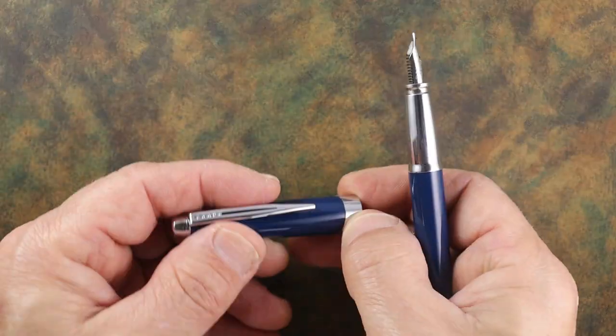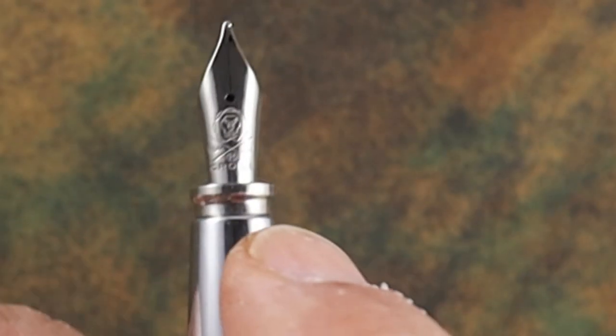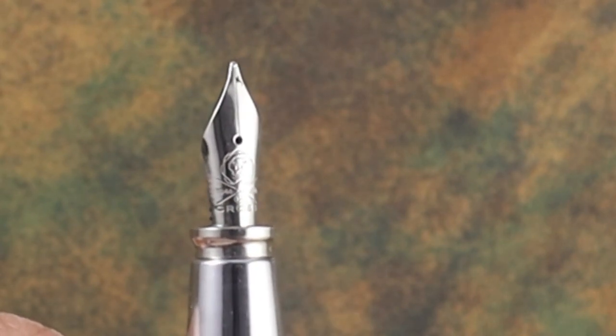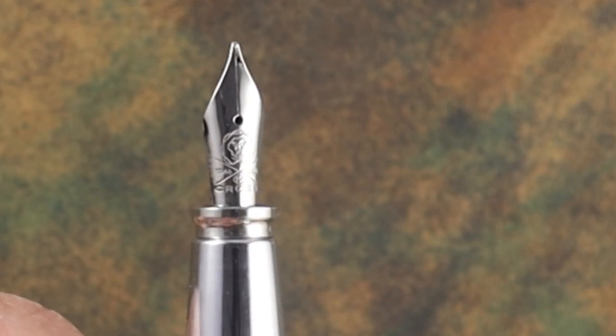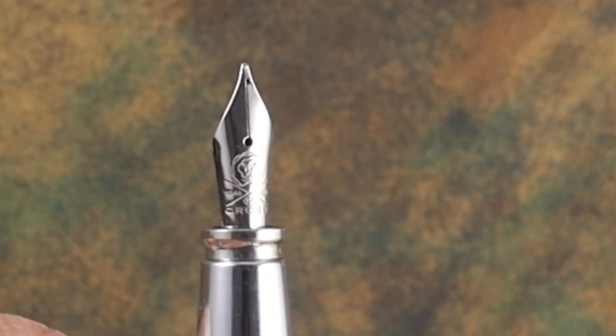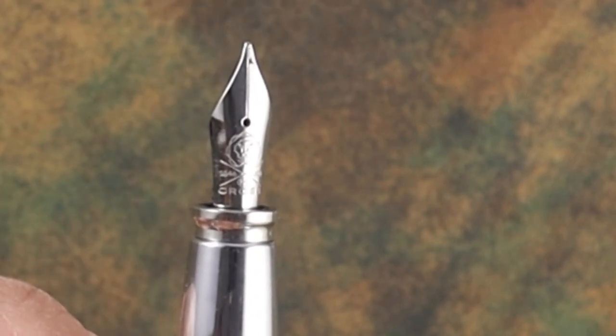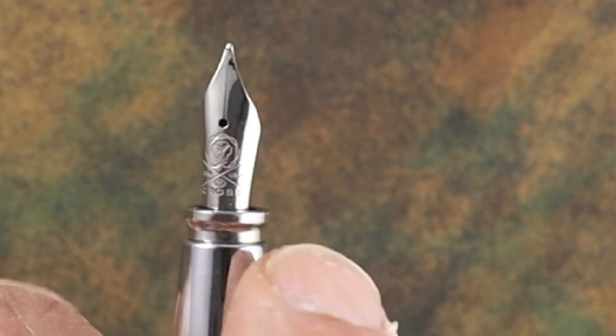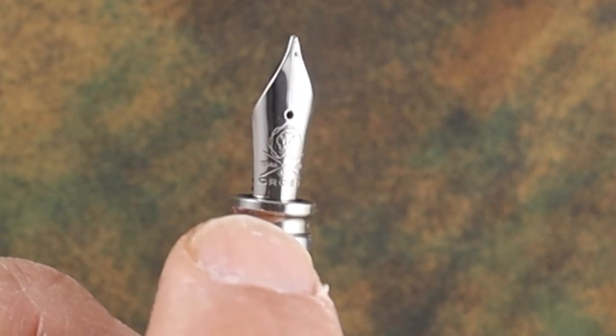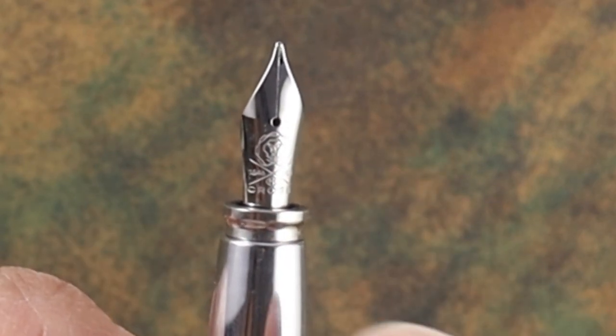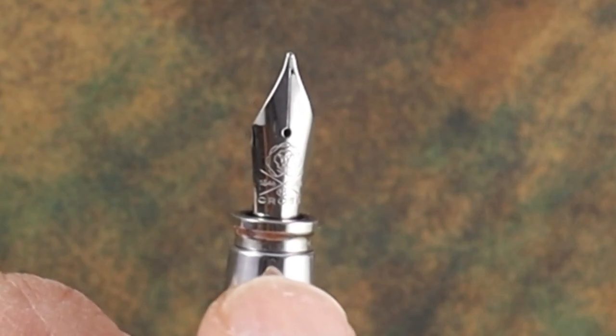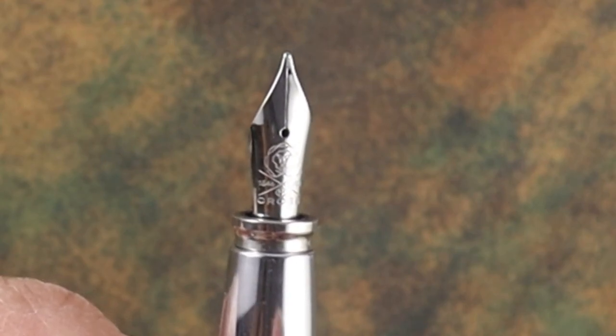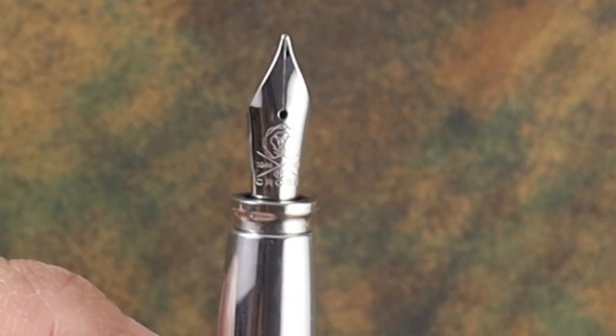The nib is a number five and it is a medium. On the top part there you have that lion's head and then you have an X. On the one side of the X it is 1846, when Cross was established no doubt, and then on the other side it says USA. On the lower side of that it has an M for medium. That's the only nib size this pen comes in is a medium, and then on the bottom it says Cross.